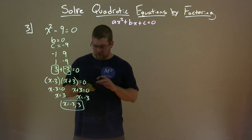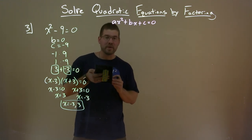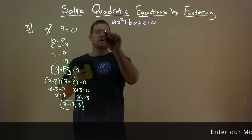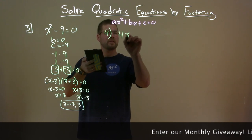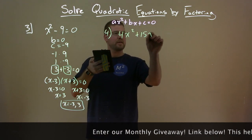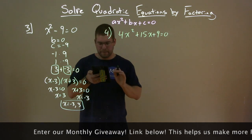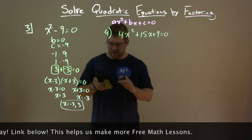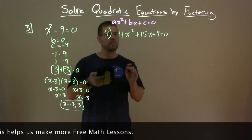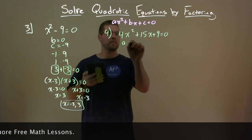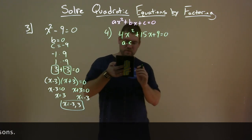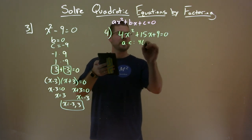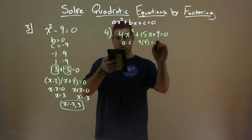Now let's dive into another example using grouping. Number four: 4x squared plus 15x plus 9 equals zero. This one's tricky — notice that a is not 1, it's 4. What we want to do is multiply a times c. So we take a times our c value: a is 4, c is 9, and together they multiply to be 36.